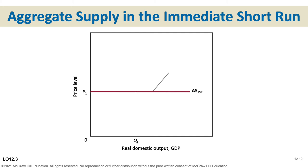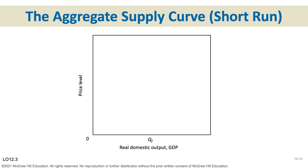Here's the aggregate supply curve in the immediate short run. We're not going to use this one, so you don't need to give it a lot of thought. Price level is on the vertical, GDP is on the horizontal. The immediate short run is a time period too short to change prices, so we can change labor and affect how much we produce, but we can't change the price level.